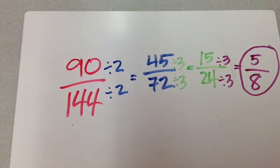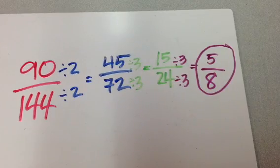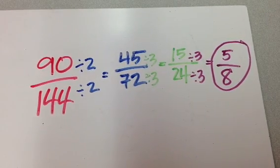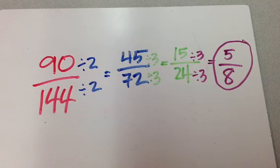So, ninety over 144 equals five-eighths. You don't always have to use greatest common factor. For example, if I had a fraction like this.